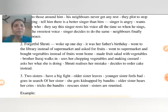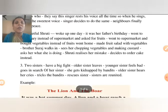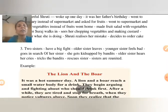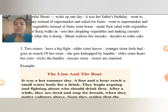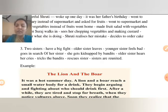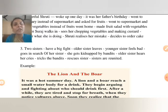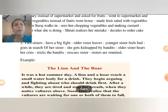Understood? Like this you have to make a story. The third point is also given: Two sisters have a big fight, older sister wills, younger sister feels bad, goes in search of her sister, gets kidnapped by bandits, older sister hears her cries, treats the bandits and rescues sister, sisters are now reunited. You can make the story very easily from this point also.